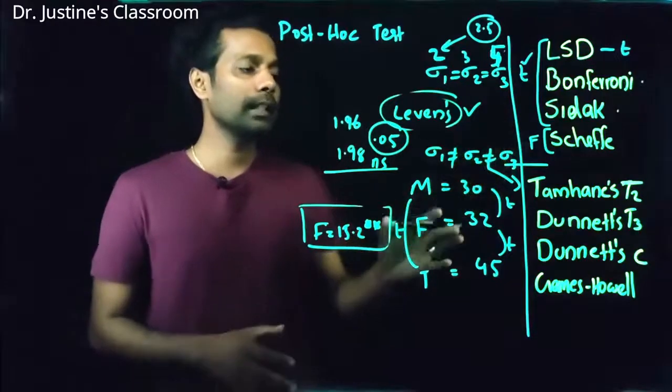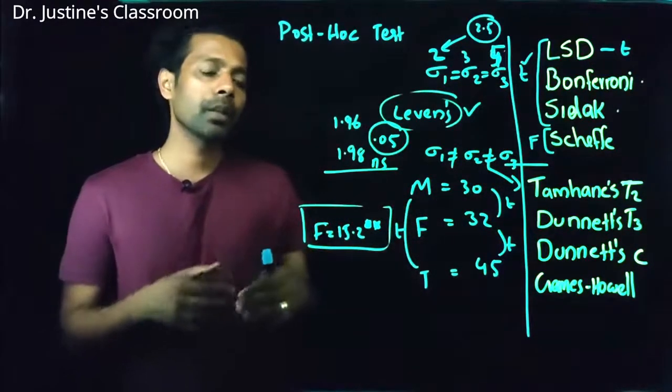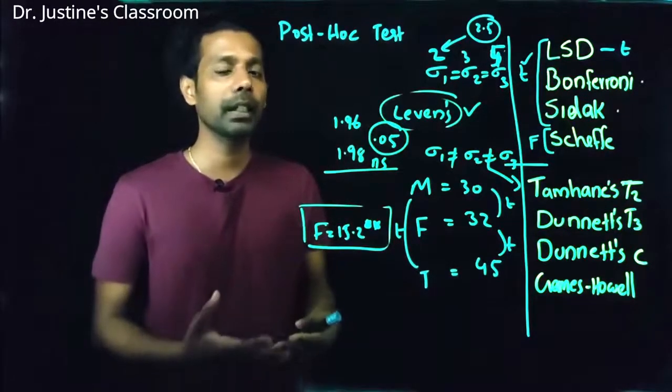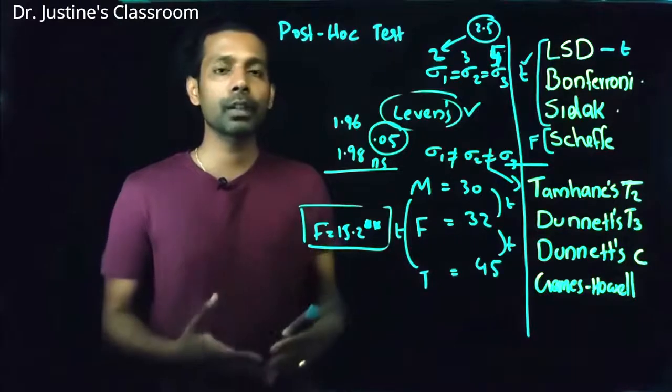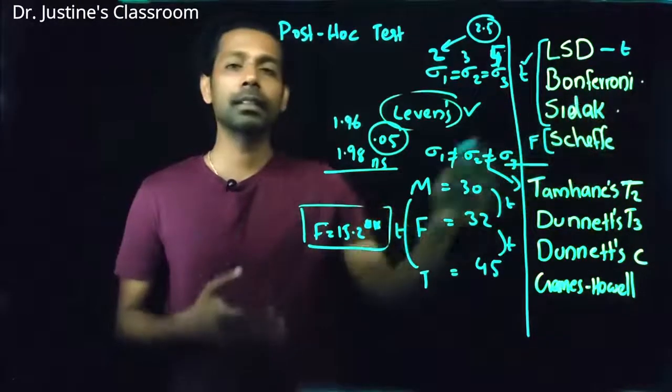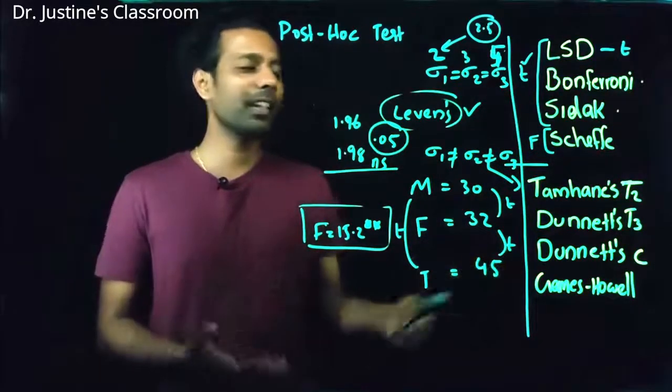Now when you go for SIDAC test and this Bonferroni test, you are trying to reduce the rework on the significance level. Why are we doing that? We generally do that to reduce the possibility of type 1 error. So when you go for SIDAC test, the chance for type 2 error increases. Bonferroni is also fine.